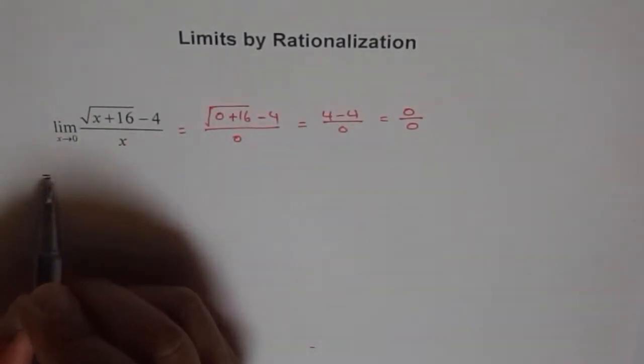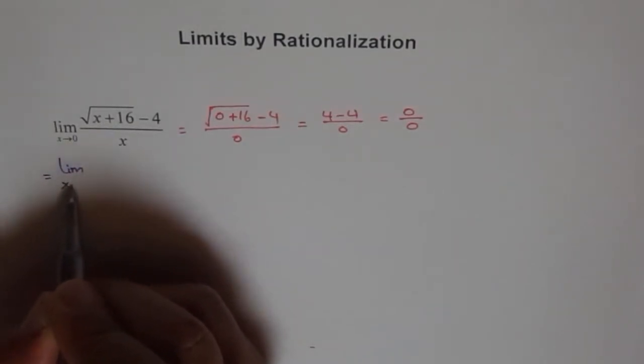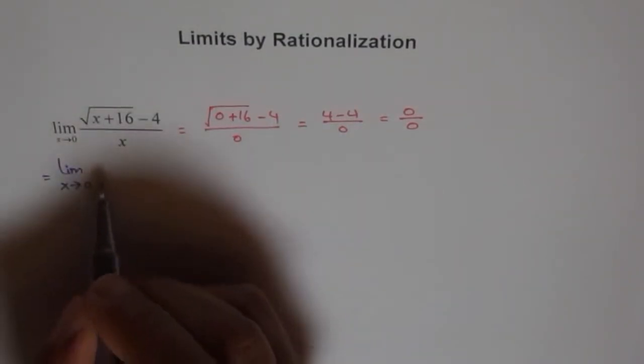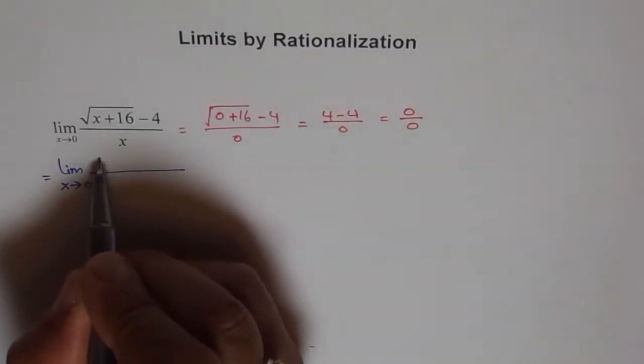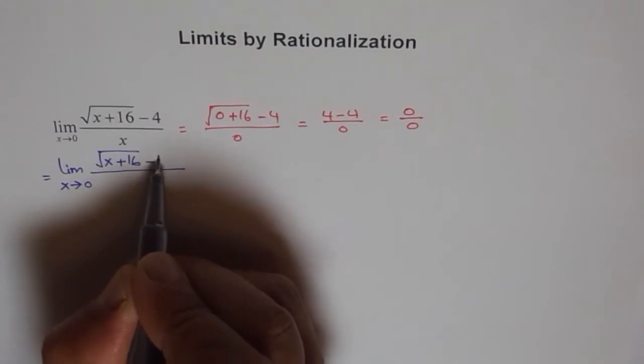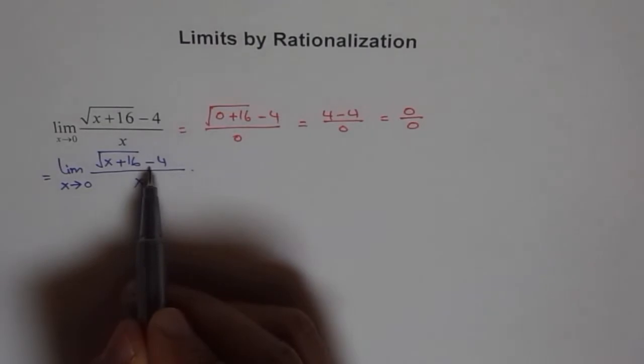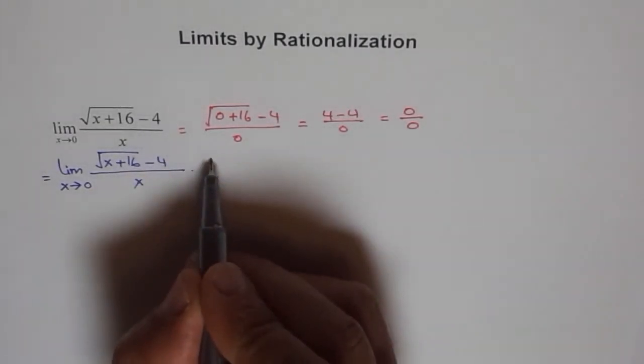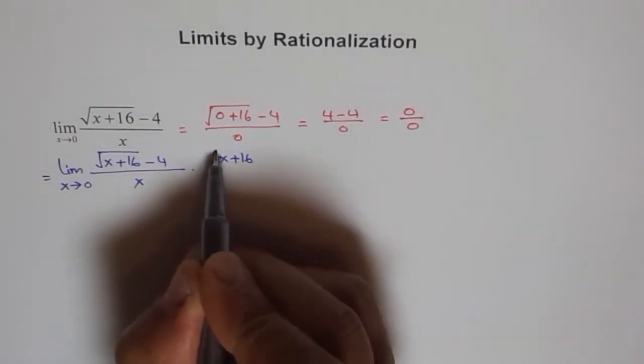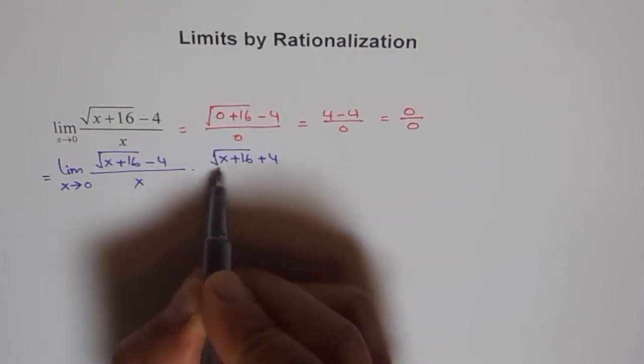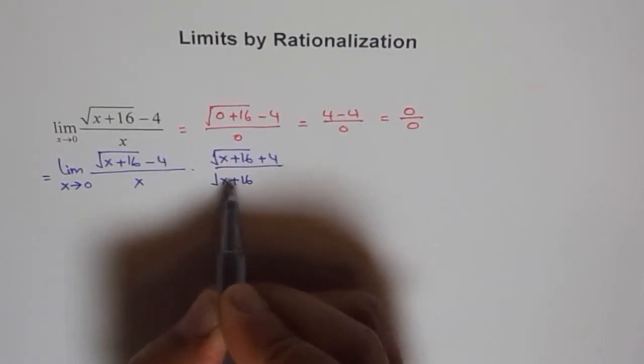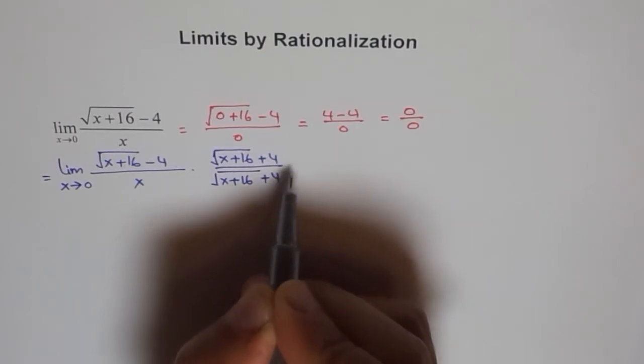So, we can write this as equal to limit x approaches 0, and the function before us is square root of x plus 16 minus 4 over x. Rationalize means we have to multiply and divide by its conjugate. So, what is the conjugate of this? We have to change this to plus.